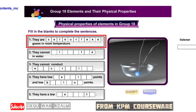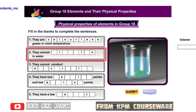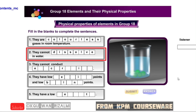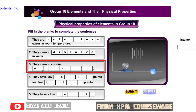Correct. Physical properties of elements in group 18: all noble gases are colorless gases at room temperature. Correct. All noble gases cannot dissolve in water.